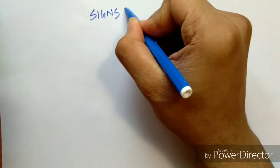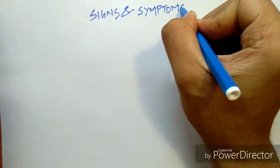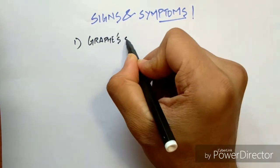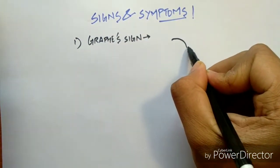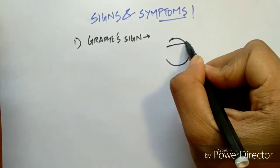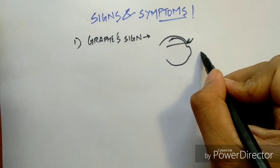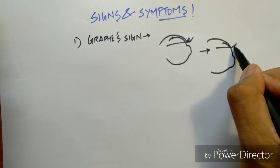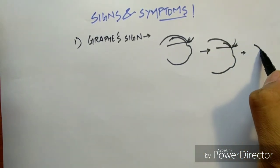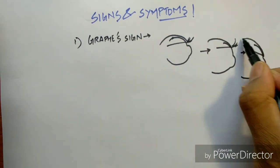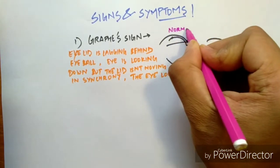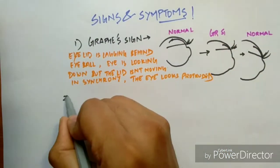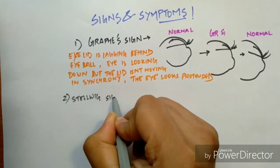The signs and symptoms that determine this diagnosis: first, Graef's sign. Basically, we can say that usually the eyeball and the eyelid are in synchrony. When we move the eyeball down or see anything down, the eyelid should move according to it. But what happens is that it doesn't, so the eye looks bulged out. The eyelid is lagging behind the eyeball, so the eye looks protruded. Second, Stellwag sign, which is infrequent blinking.